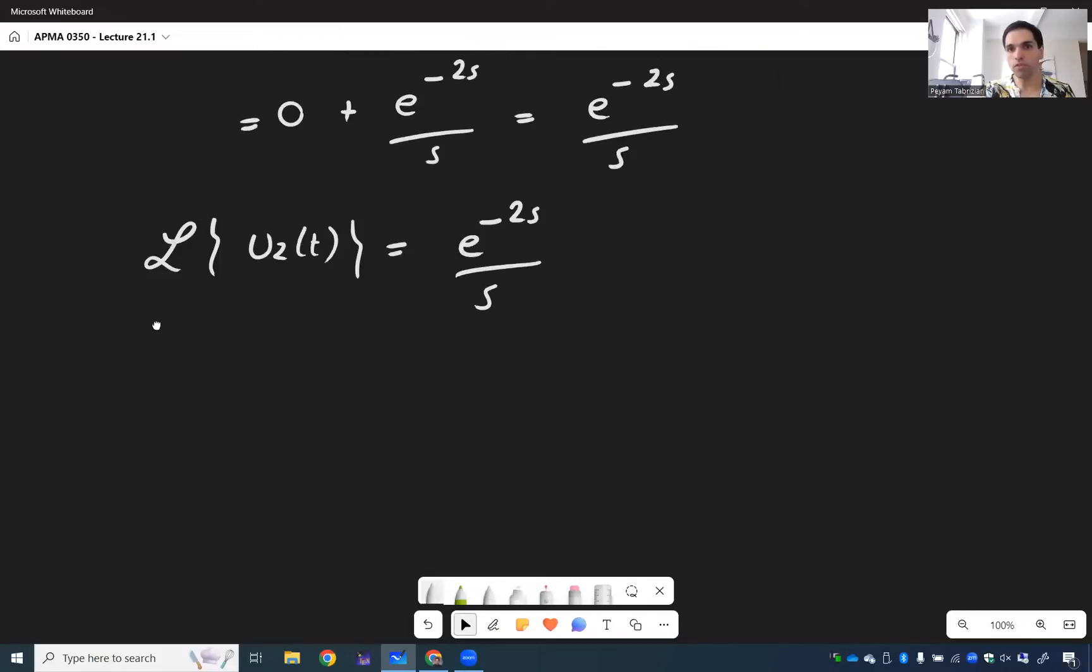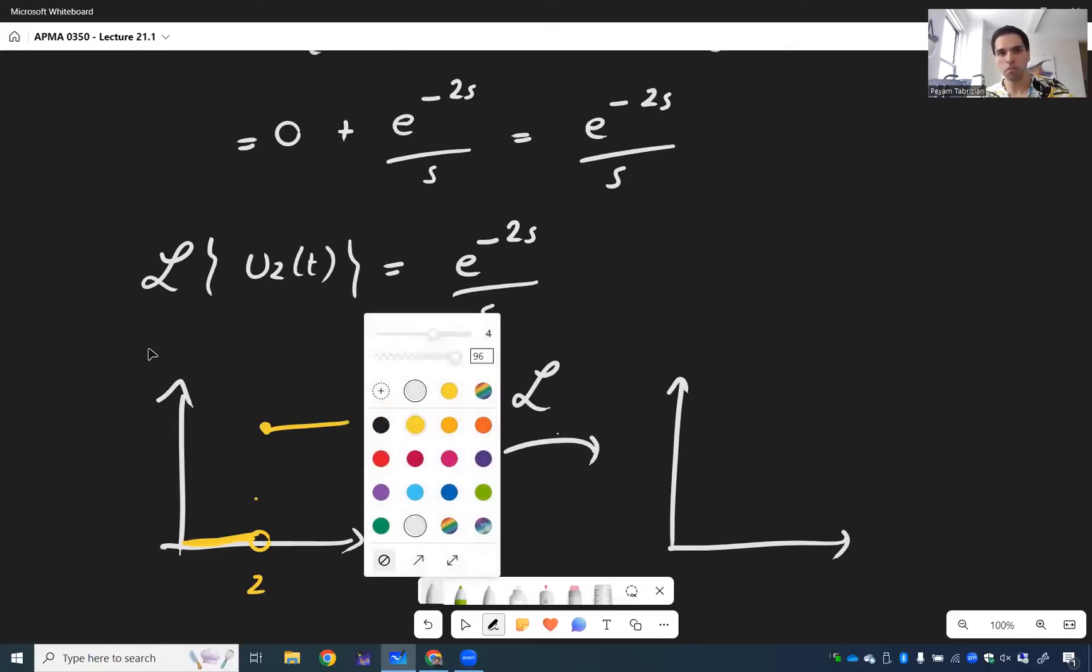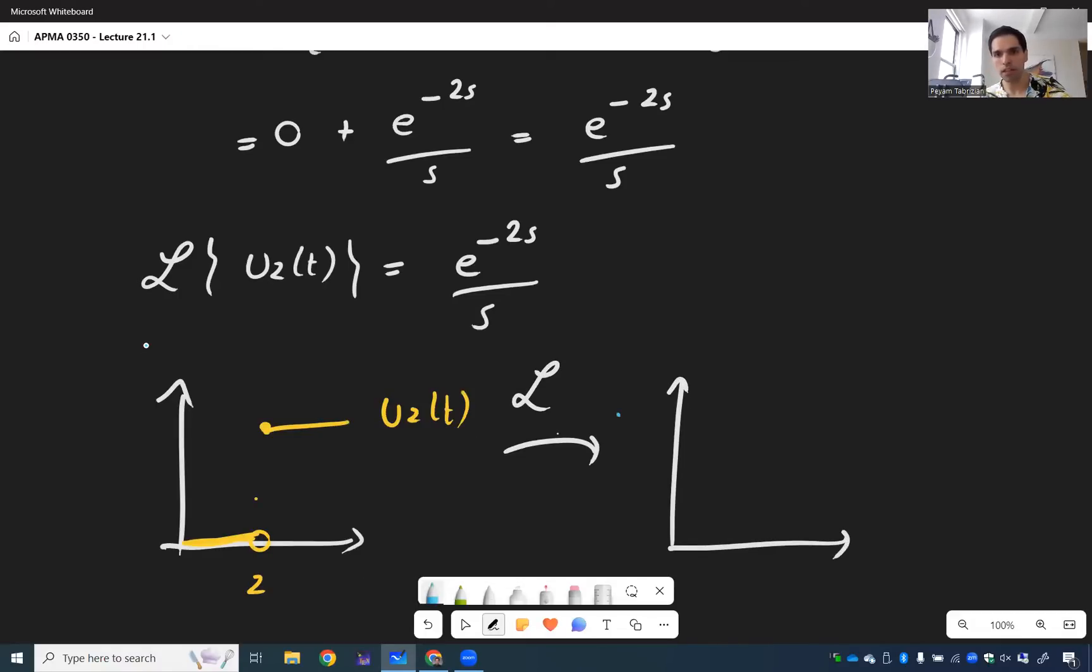In other words, if you look at the picture, what happens when you take the Laplace transform of this function that switches at two, what you end up getting is sort of a hyperbola, but with exponential decay. So like E to the minus 2S over S.